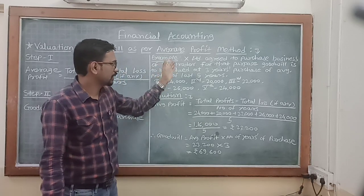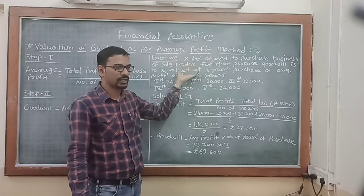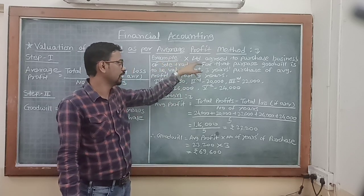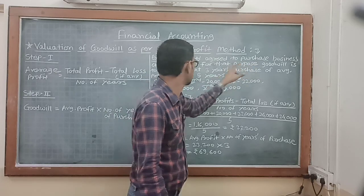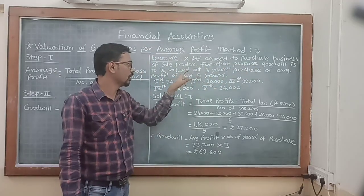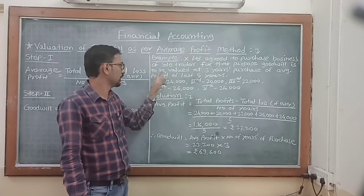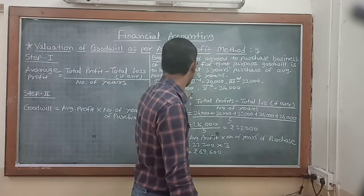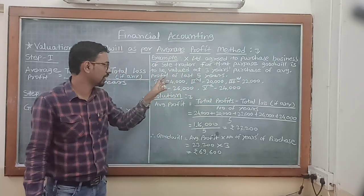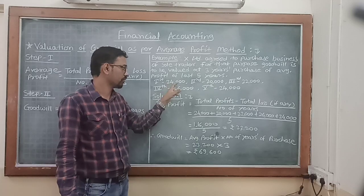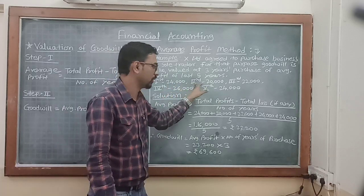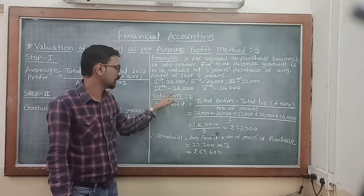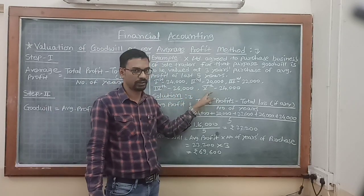To understand this method better, we will solve a small example. X Limited agreed to purchase the business of a sole trader. For that purpose, goodwill is to be valued at 3 years' purchase of average profit of the last 5 years. First year profit: 24,000. Second year: 20,000. Third year: 22,000. Fourth year: 26,000. And the fifth year: 24,000.